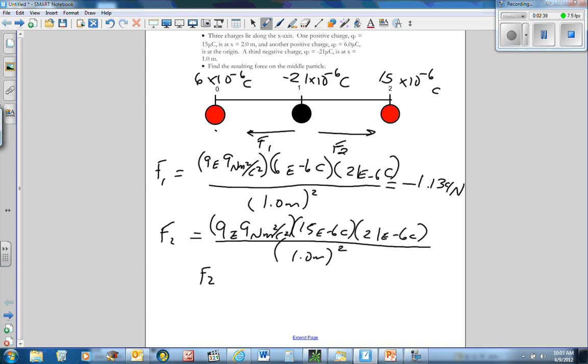So f2 is going to equal positive if we multiply these three on the top together. Dividing by 1 squared is going to give the same number. So it's going to be 2.835 newtons positive to the right. So if I subtract that from 1.134, I get a net force.